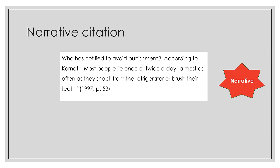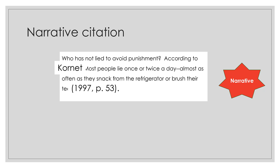Second is to use the author's name in your narrative. Often you'll find that it flows better. This is especially effective if the author has authority, such as an expert in the field or on a government website. This is called a narrative citation.